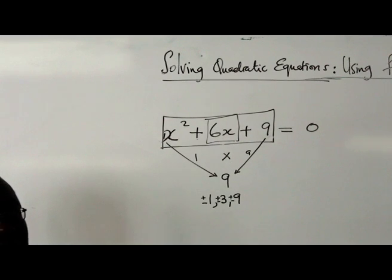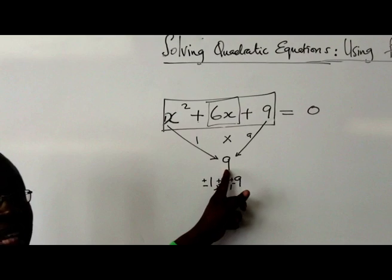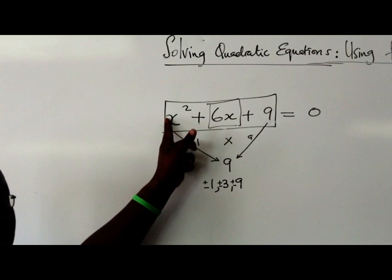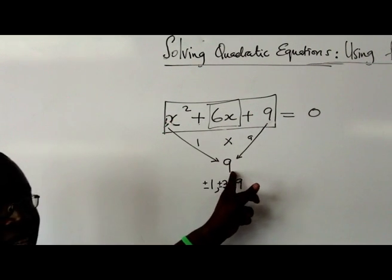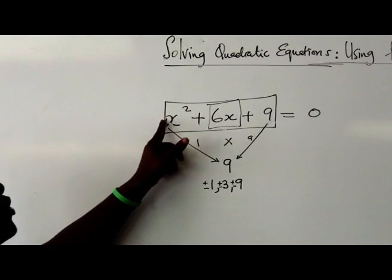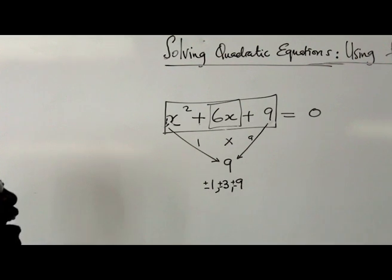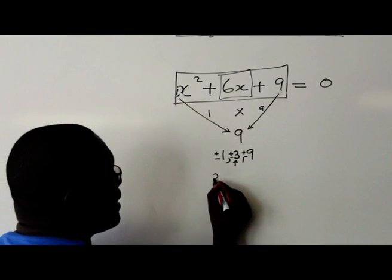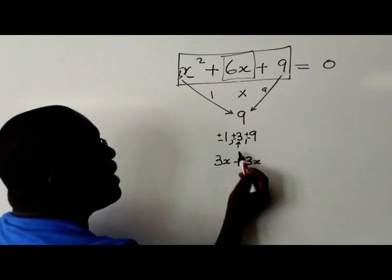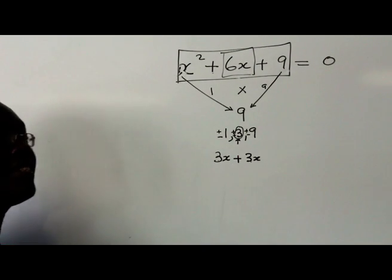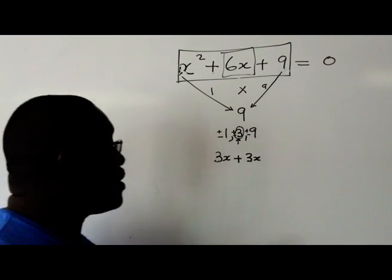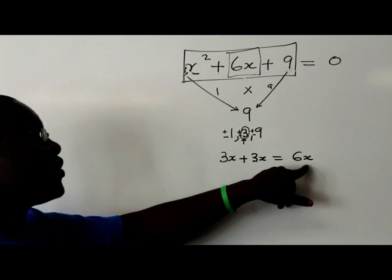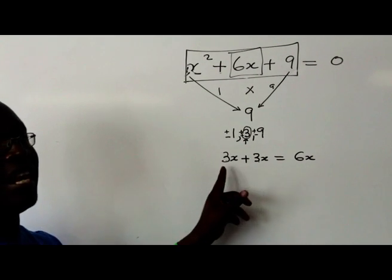Which two factors of 9 add to give 6x? Remember, 9 is the product of the independent term and the coefficient of x squared — that's how we got that 9. If this coefficient was a 2, it would have been 2 times 9, which would have been 18. From my thinking, I can play around: if I say 3x plus 3x — 3 is a factor of 9 — and 3x plus 3x gives me 6x. So I can substitute the 6x with two terms: 3x and 3x.